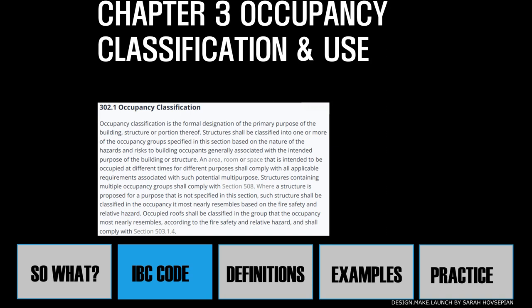The IBC defines occupancy as a way to control the classification of all buildings and structures as to their use and occupancy. The philosophy is to assess the relative risk posed by each occupancy and to separate the uses into designated groups. To determine the occupancy, we ask questions such as: how many people will be using the building? Are there hazardous materials? And how long are occupants going to occupy a space?